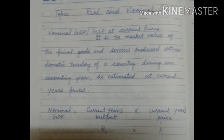The formula is: Nominal GDP = Current year's output × Current year's price, which we write as Q1 × P1. The concept of P1 and P0 — current year and base year — you have also studied in Class 11.